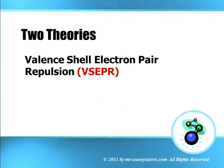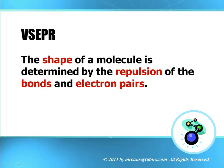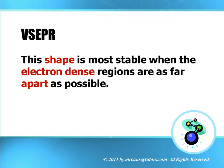Two theories involved here. We have the valence shell electron pair repulsion and we have the valence bond theory. And the one we're going to focus on is the VSEPR, the valence shell electron pair repulsion theory. The VSEPR theory states the shape of a molecule is determined by the repulsion of the bonds and electron pairs. This shape is most stable when the electron dense regions are as far apart as possible.